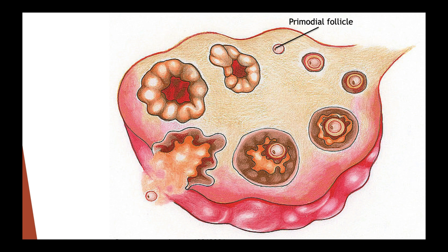At birth, the ovaries together contain about 1 to 2 million primary oocytes. Out of these, only about 500 fully mature during the time between puberty and menopause. At puberty, FSH (follicle stimulating hormone) stimulates a small number of follicles to resume growth and development. Out of these, only one follicle fully matures.